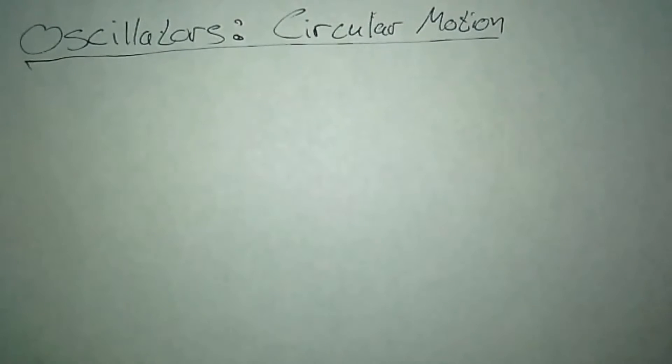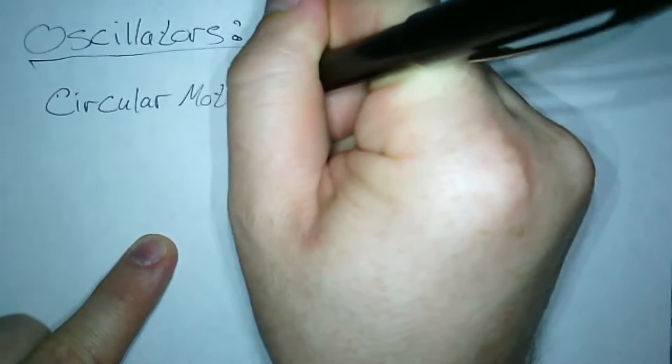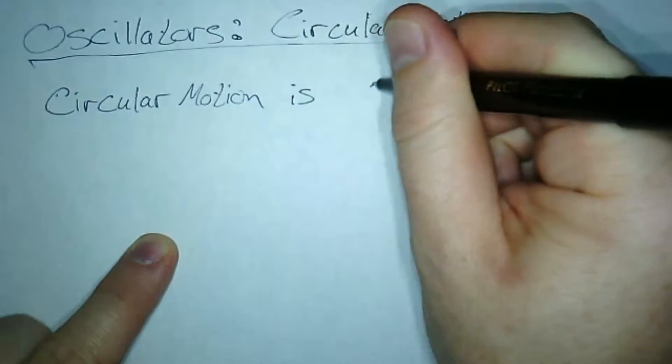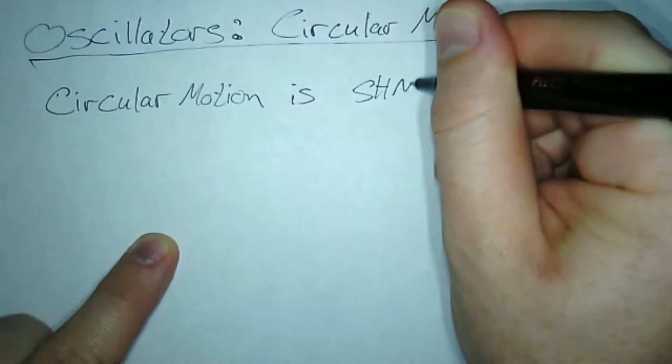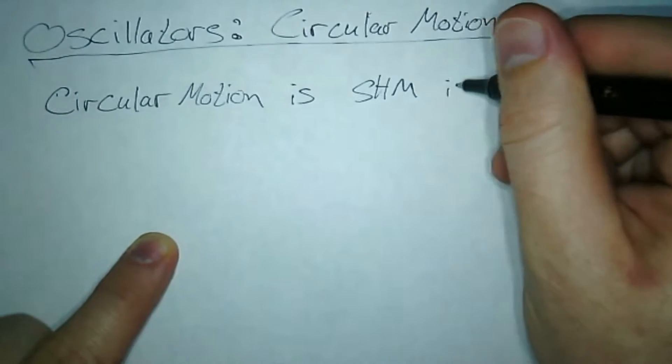Okay, so in this video I'll talk about how circular motion is a special case of simple harmonic motion. Circular motion is simple harmonic motion (SHM) in two dimensions.